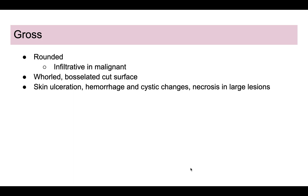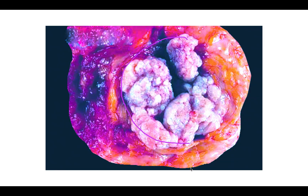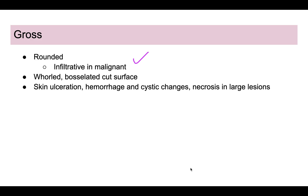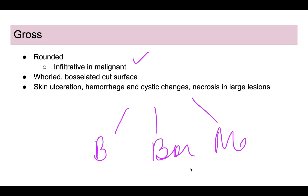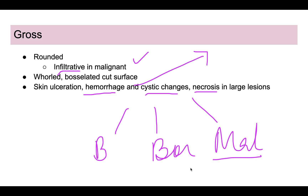Grossly, if we receive a mastectomy specimen — because this is an older age group and it can resemble breast carcinoma — it has rounded edges. Only in the malignant form will it have infiltrative margins; otherwise it has a well-circumscribed cut surface. Degenerative changes such as hemorrhage, cystic changes, and necrosis can be seen in larger lesions, but these do not indicate malignancy.